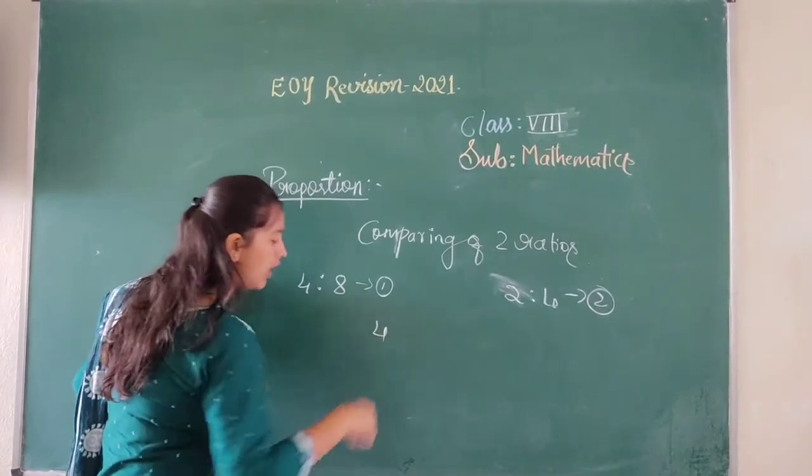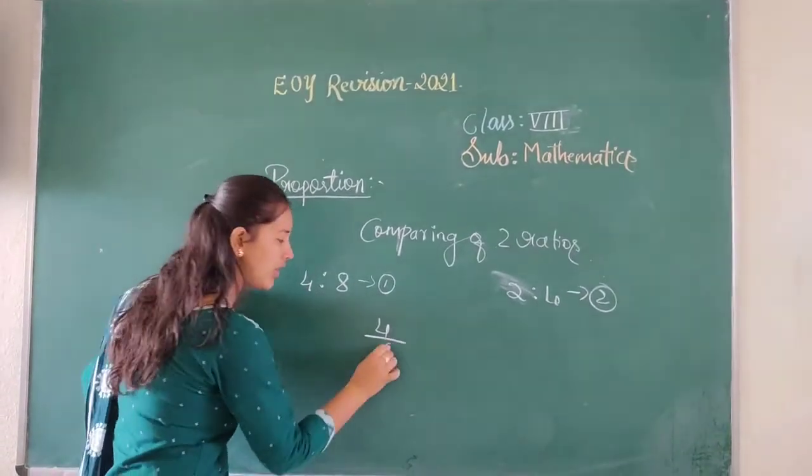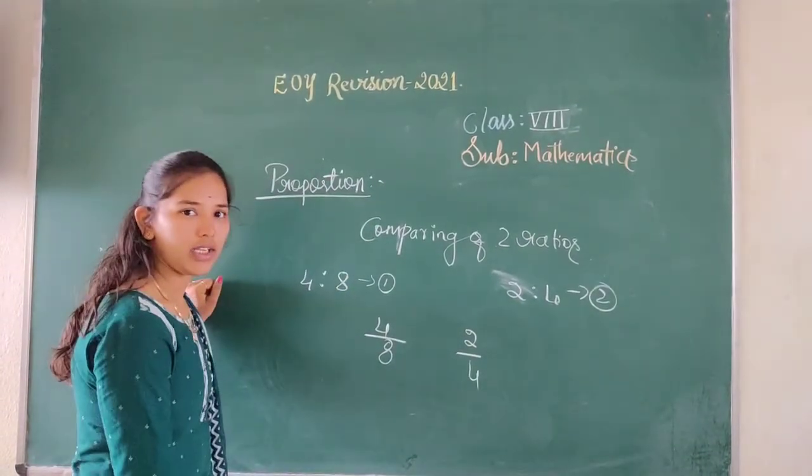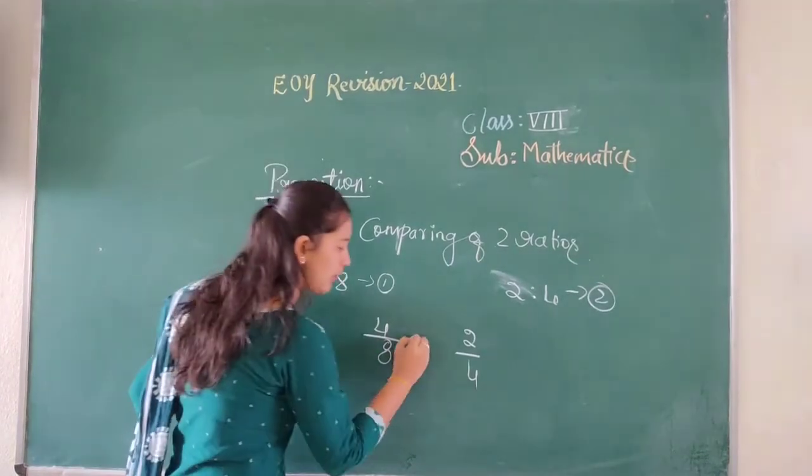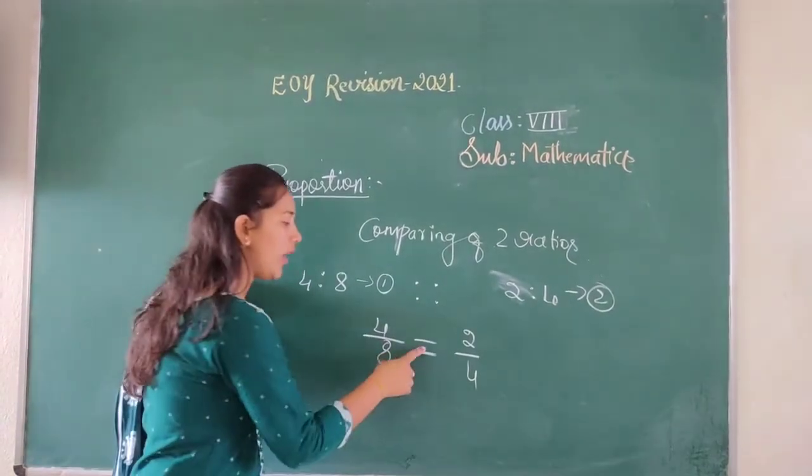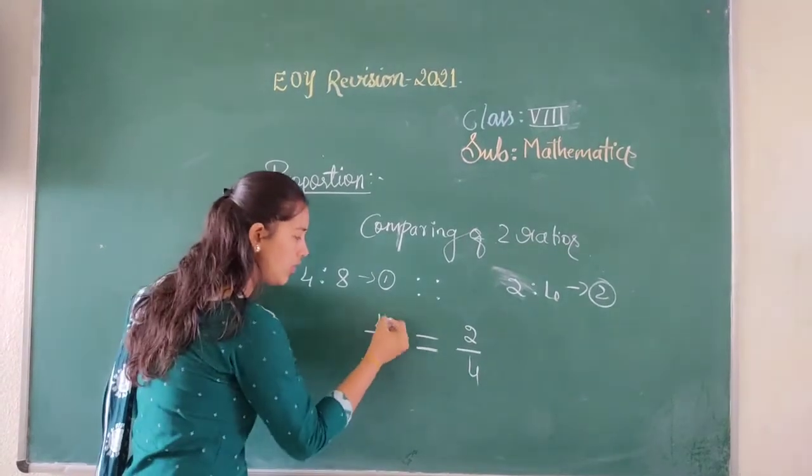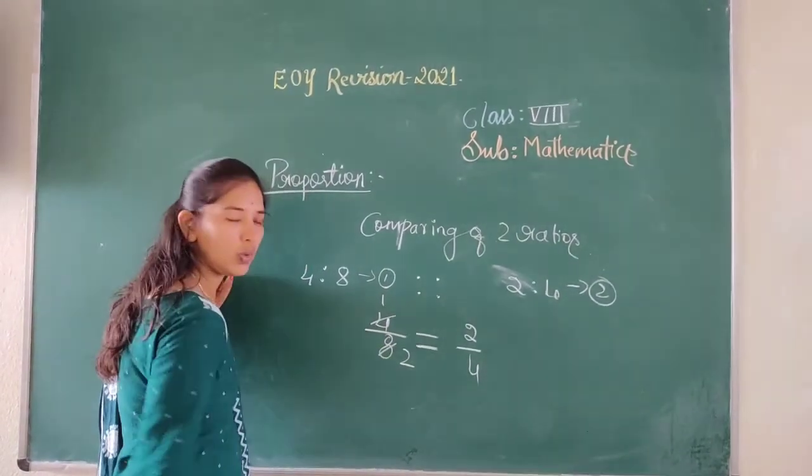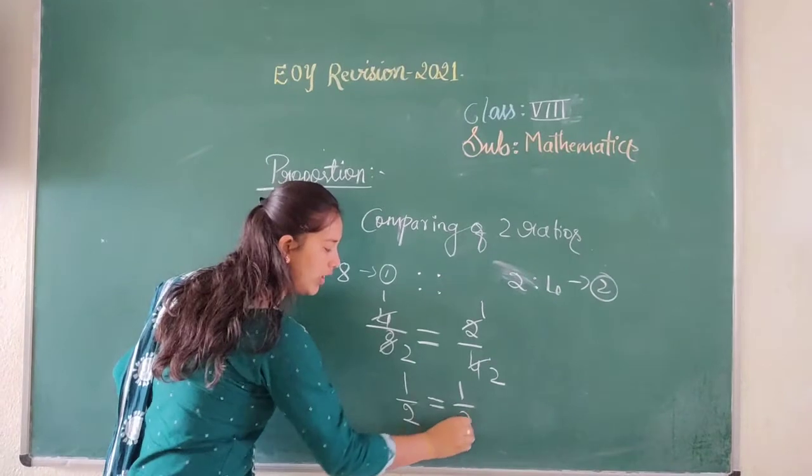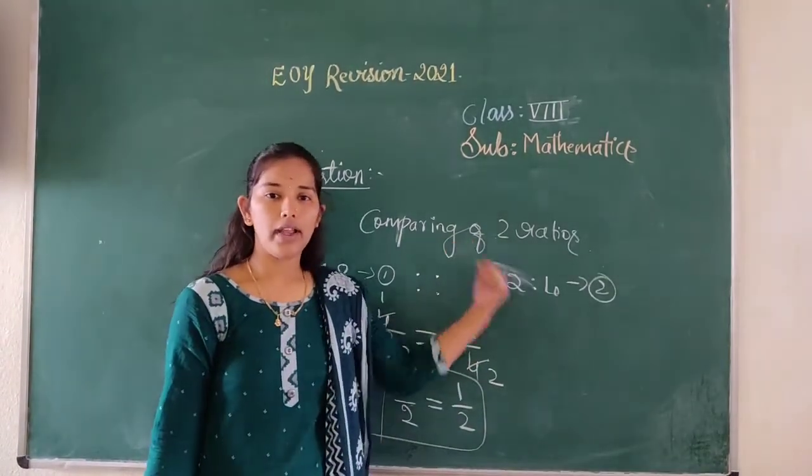See here, while I am comparing, we can write the ratio in division form and in fractions. 4 is to 8 will become 4 by 8, and 2 is to 4 will become 2 by 4. For proportion, we are using the symbol equal or proportionality symbol. Why we are using equal here? When we are comparing 2 ratios, the 2 ratios must be equal. 4 divided by 2 is 2, 8 divided by 2 is 4. 2 divided by 2 is 1, 4 divided by 2 is 2. We got 1 divided by 2 is equal to 1 divided by 2. Yes? So, proportion means comparing of 2 ratios.